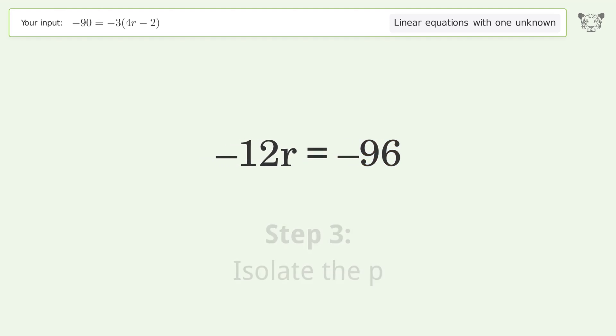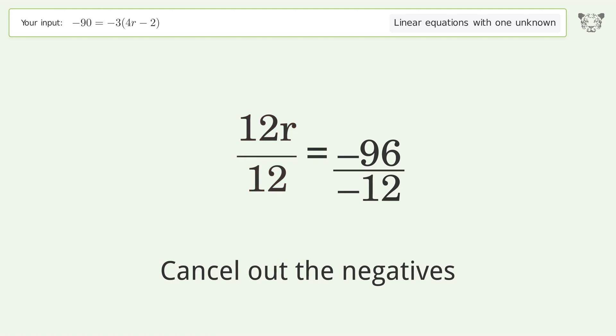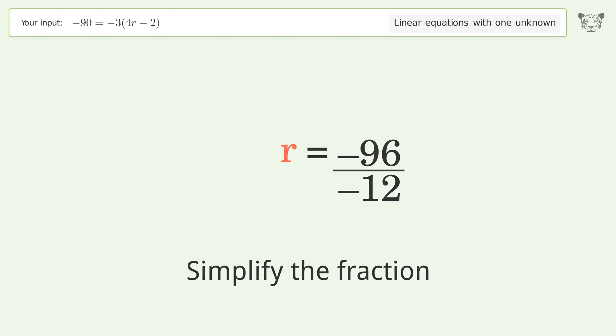Isolate the r by dividing both sides by negative 12. Cancel out the negatives and simplify the fraction.